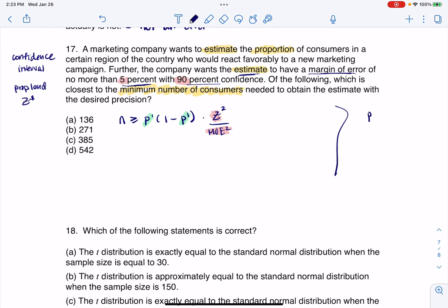P prime is going to default to 50%. This gives us what we call a conservative estimate, meaning it'll give us a larger sample size than we might have needed, but it keeps us on the safe side. So we're playing it safe, playing it conservatively. So let's go ahead and do this.